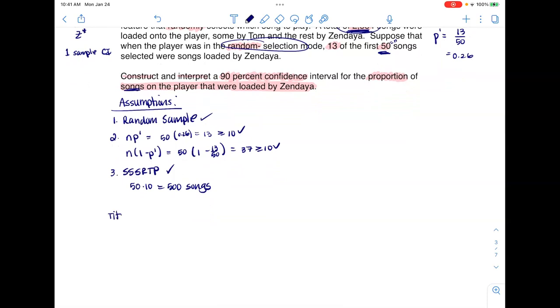The next thing I need is, is my sample size small relative to my population so that I can sample without replacement? Let's take 50 and multiply it by 10, that would be 500 songs loaded into this player. I know that there are more than 500 songs on the player because we were told there were 2,384. So my sample size is small relative to my population. The next thing I want to do is give my work a title. This is going to be a one sample proportion Z star confidence interval.